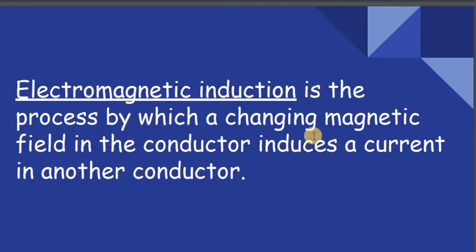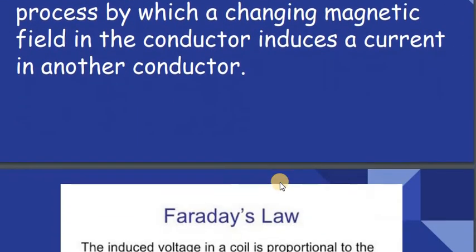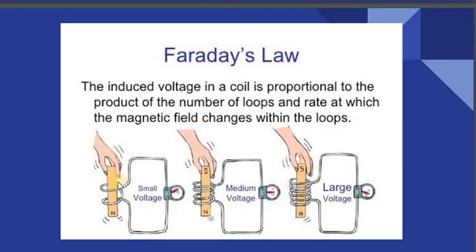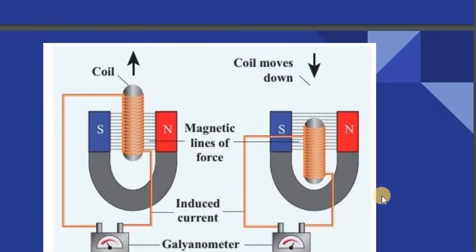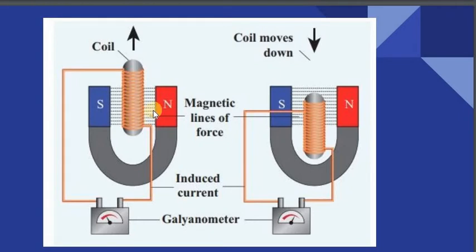Electromagnetic induction is the process by which a changing magnetic field in a conductor induces a current in another conductor. When a magnet is pushed inside the coil, there is a change in the magnetic flux, and due to this change in magnetic flux an EMF is induced, which can be seen by the deflection in the galvanometer. As the number of turns in the coil increases, the deflection increases, showing that the induced current is higher. When there is relative motion between the coil and the magnet, there will be a change in magnetic flux, resulting in an induced EMF detected by the galvanometer.